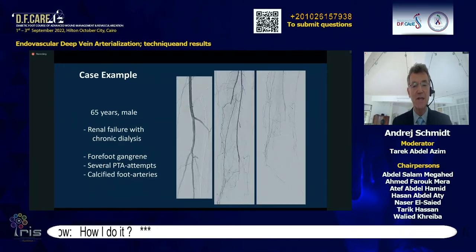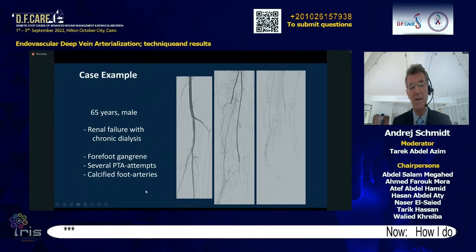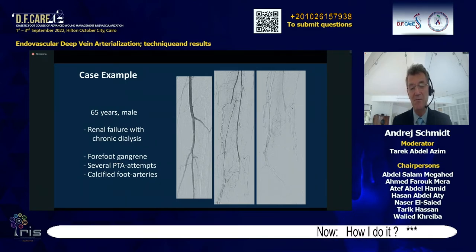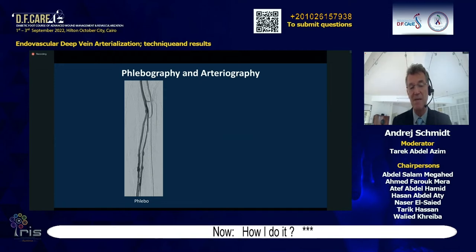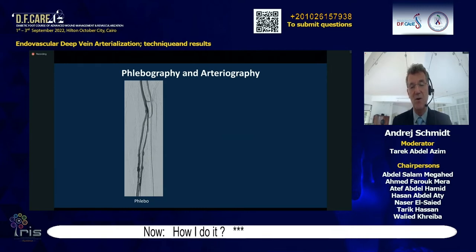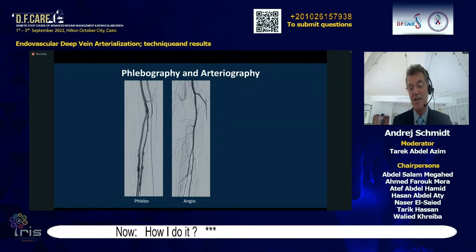Here is a case: a 65-year-old male patient with renal failure on chronic dialysis — the typical case. He had four-foot gangrene; several PTA attempts failed because of calcifications in the foot arteries. The procedure starts with mapping the veins with ultrasound, which can be difficult when there is edema. We puncture usually at the malleolus. A venography shows the plantar veins going upwards and an arteriography reveals a long tibial trunk occlusion with the anterior occluded, peroneal distally occluded, and a small posterior tibial stump.